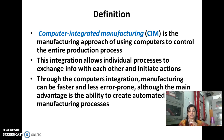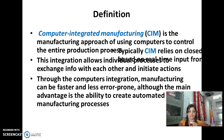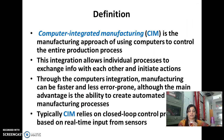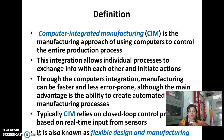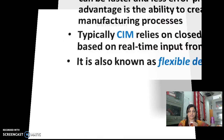Manufacturing becomes less error prone, and the main advantage is the ability to create automated manufacturing processes. Typically, CIM relies on a closed-loop control process based on real-time input from sensors. It is also known as flexible design and manufacturing.